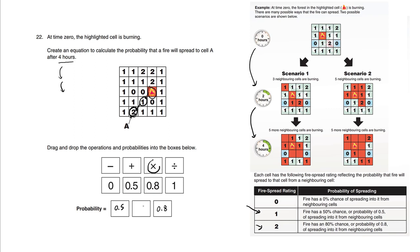And just out of curiosity, 0.5 multiplied by 0.8 is 0.4 or 0.40, which is 40%. There's a 40% chance that this fire will spread to this A cell.